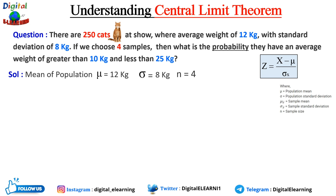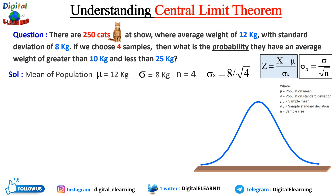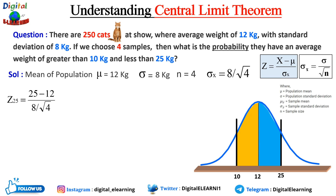We apply the central limit theorem formula: z equals x minus mu divided by sigma_x, where mu denotes the population mean, sigma denotes the population standard deviation, mu_x denotes the sample mean, sigma_x denotes the sample standard deviation, and n denotes the sample size. Sigma_x is calculated as sigma divided by the square root of n, which gives us 8 divided by the square root of 4. We apply the normal curve with mean 12 and limits of 10 and 25.